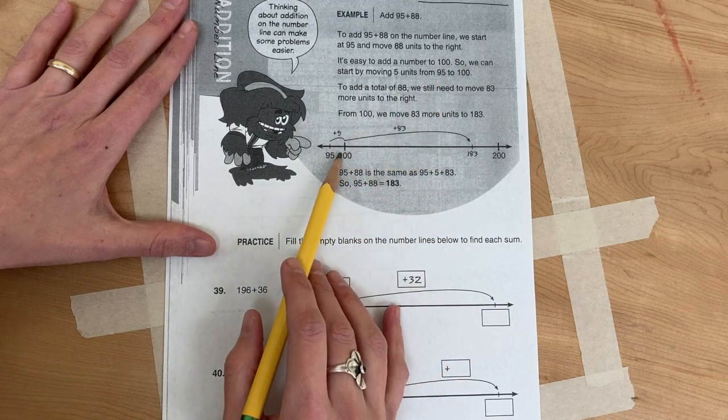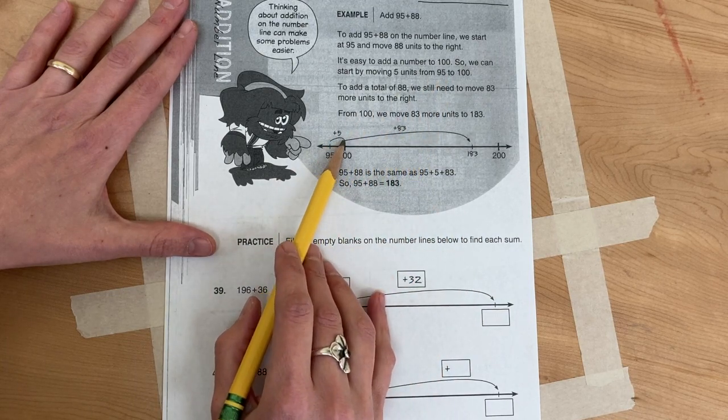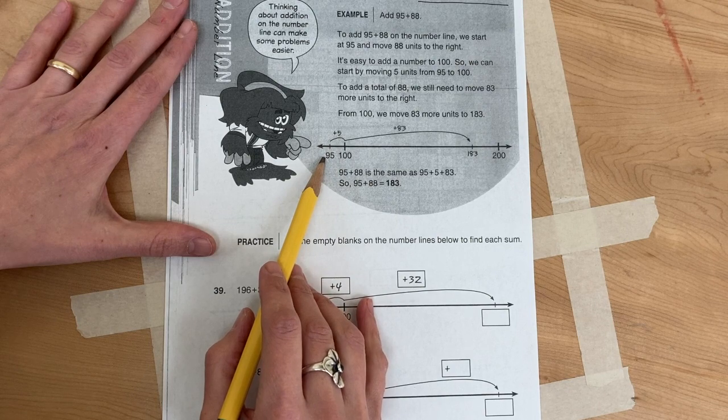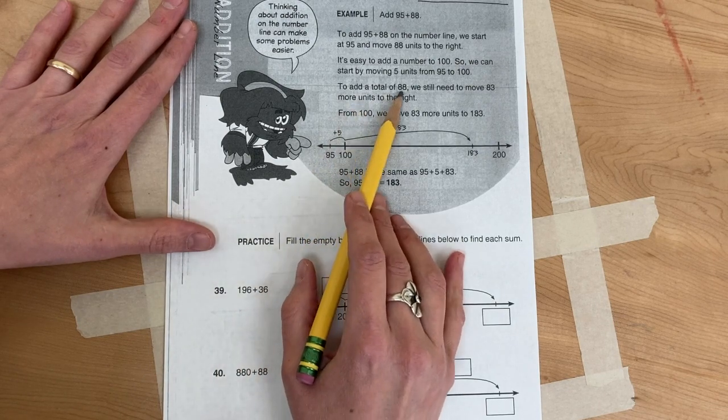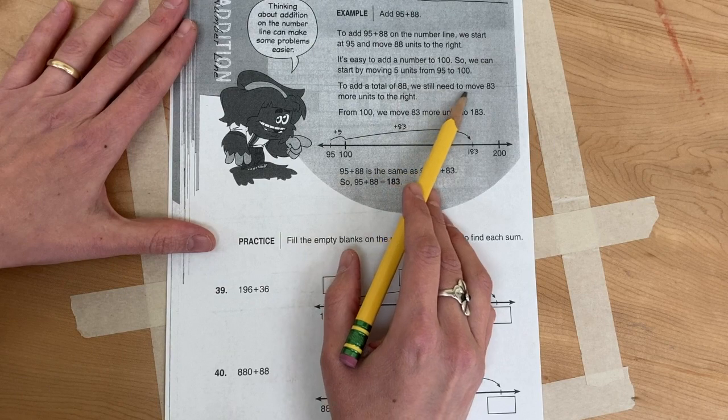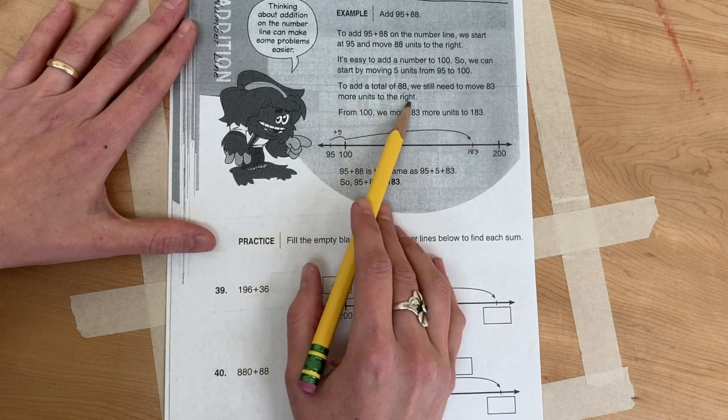So we can start by moving 5 units from 95 to 100. To add a total of 88, we still need to move 83 more units to the right.